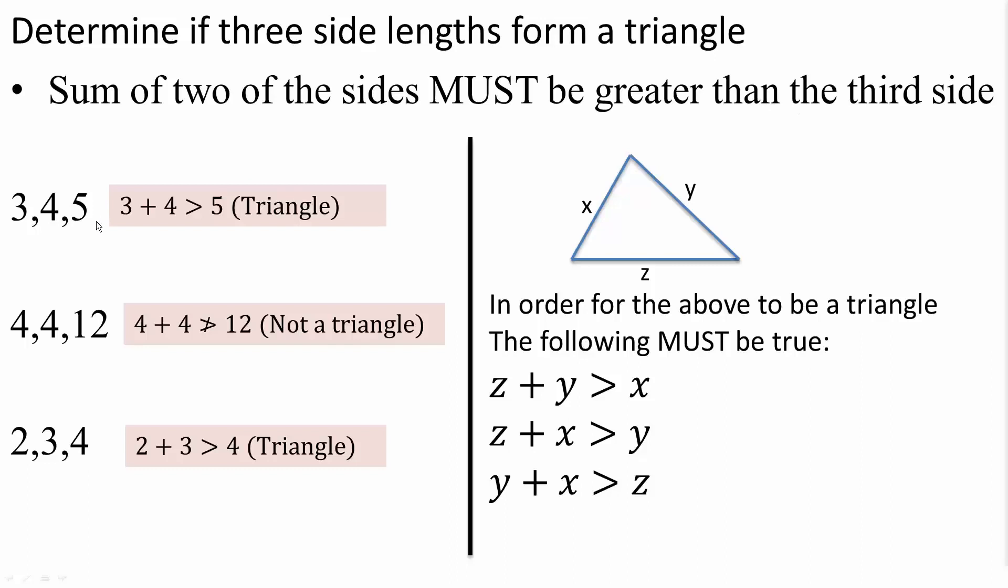So if you have 3, 4, 5, two of the sides, 3 plus 4 is 7, 7 is greater than 5, so our three sides will form a triangle.